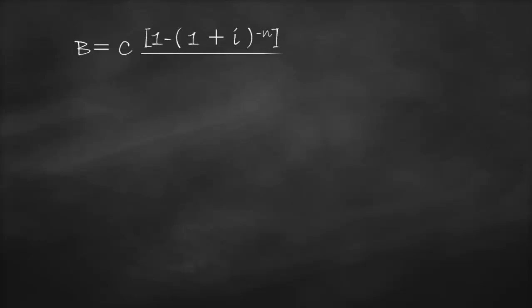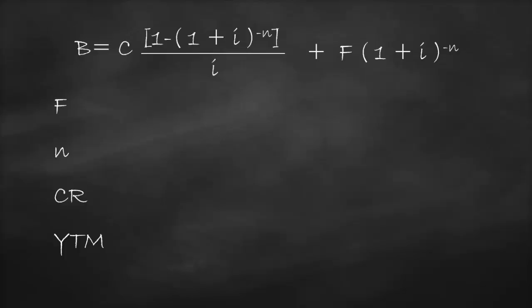We know that our bond price formula is equal to the present value of coupon payments plus the present value of future value. The variables we have here are face value, maturity, coupon rate, yield to maturity, and bond price — so we have five variables.